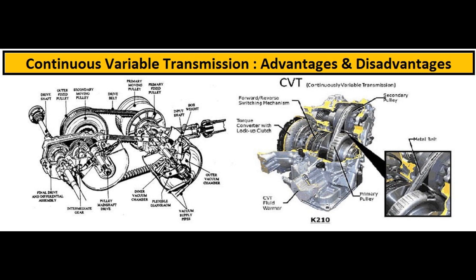The size variation of pulleys means diameters also vary, which creates continuous gear ratios. In a manual gearbox, input and output gear teeth decide the ratios, but in CVT, variation in diameter decides the ratios.